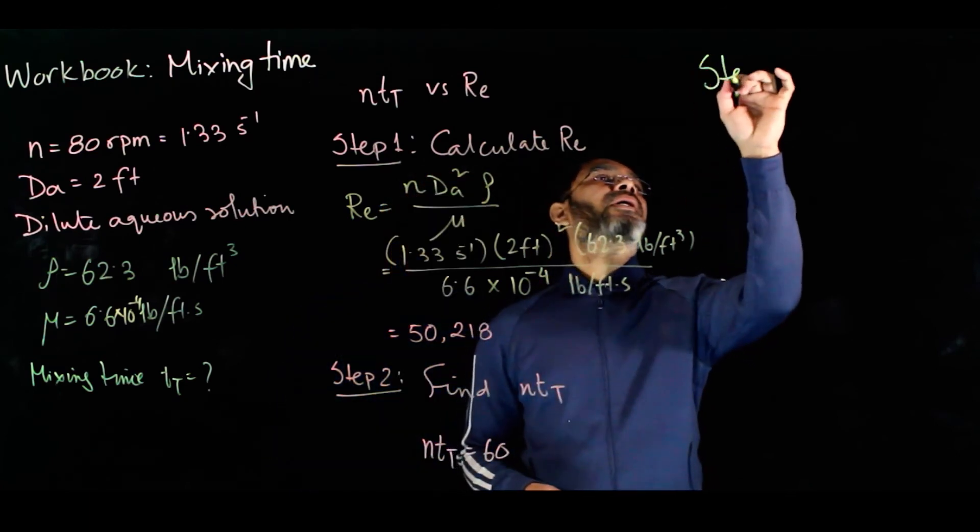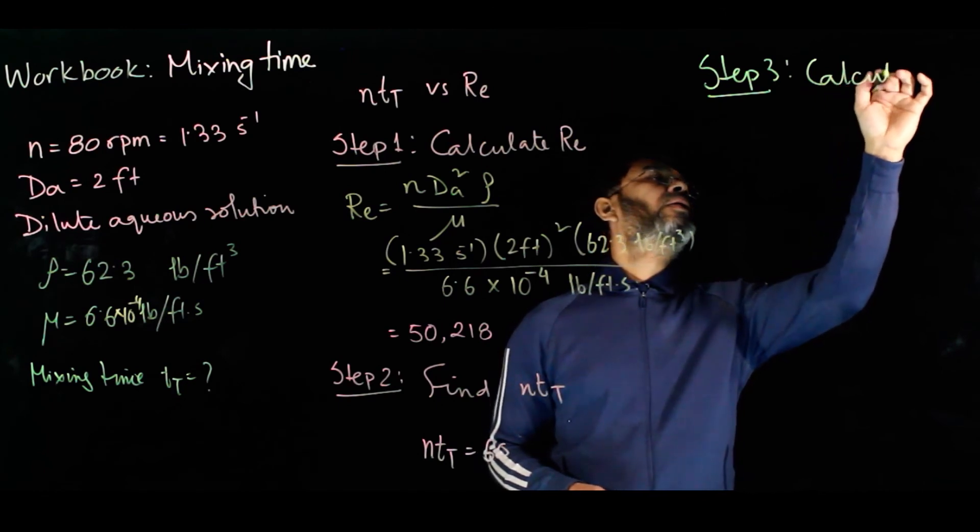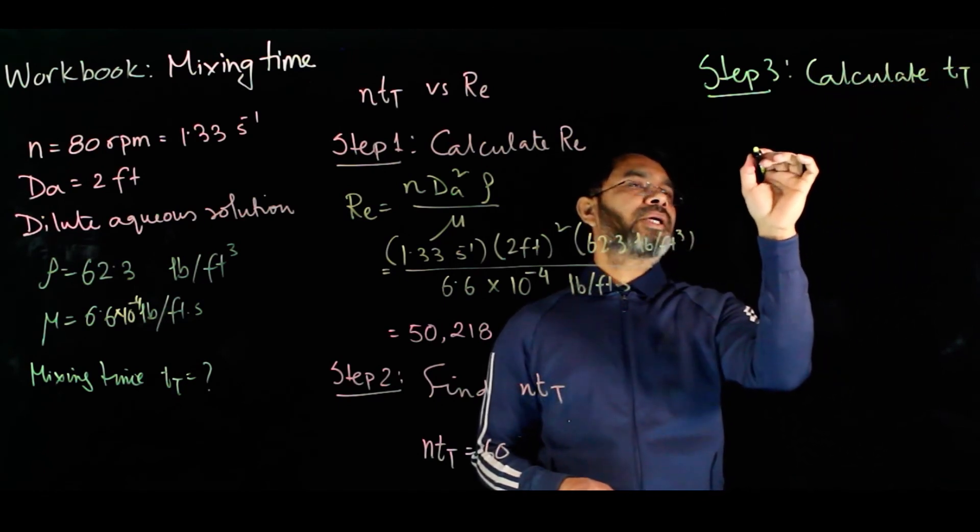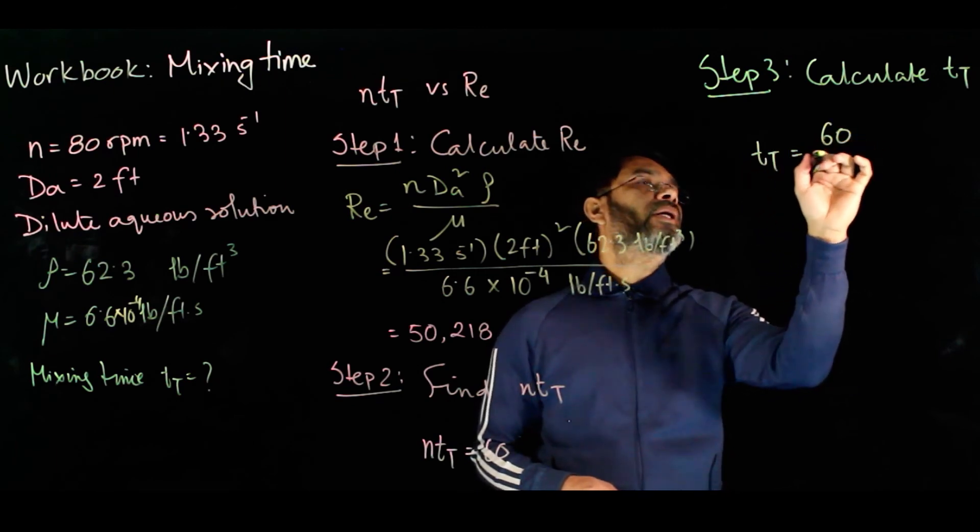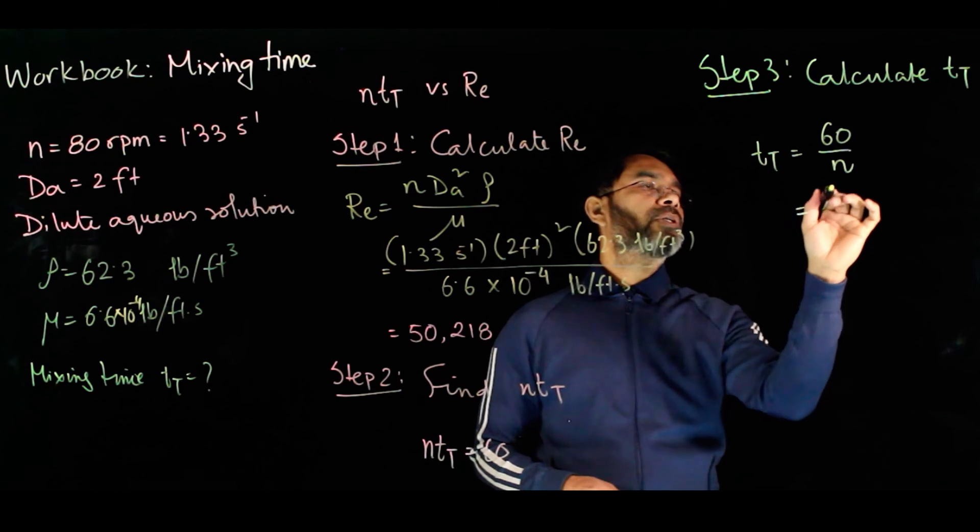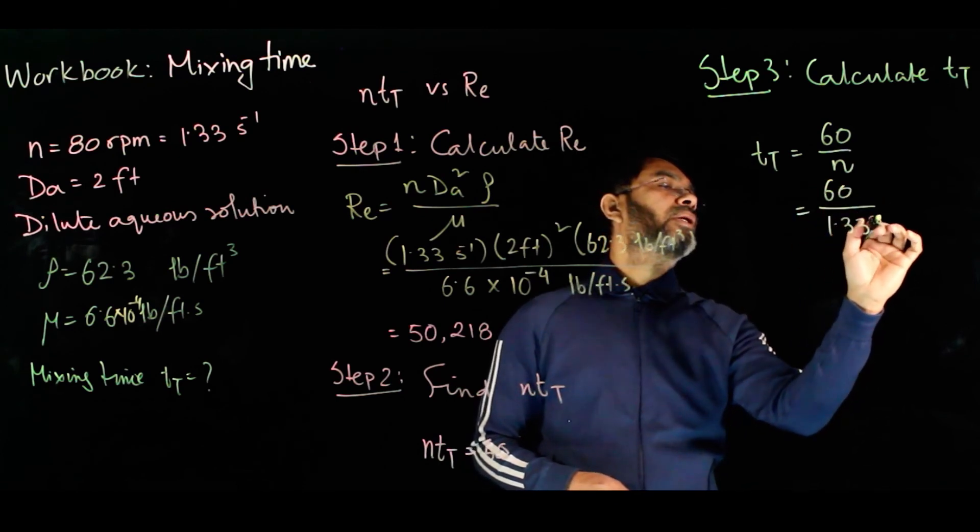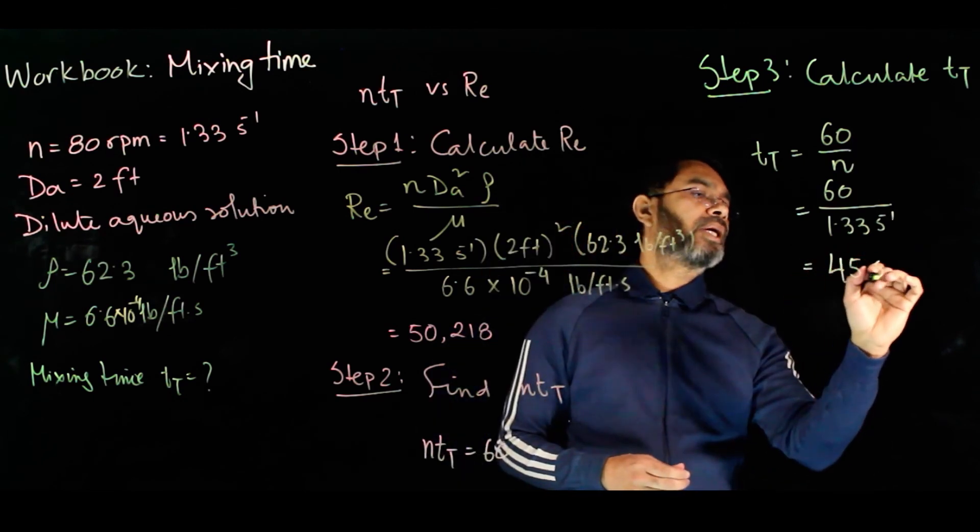So step 3: simply calculate tt, which is given as tt = 60 / n. This is 60 / 1.33, which gives the value 45 seconds.